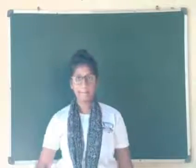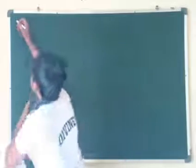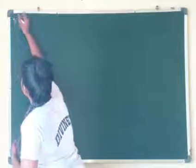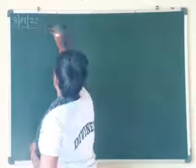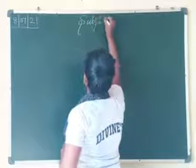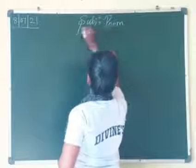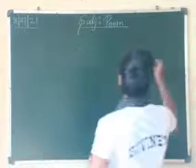Children, go and review your book — Match Level B, book number 1. I am going to write today's date. Today's date is 8th July 2021. And our subject name is poem. Today we are going to learn a poem. Page number 51.